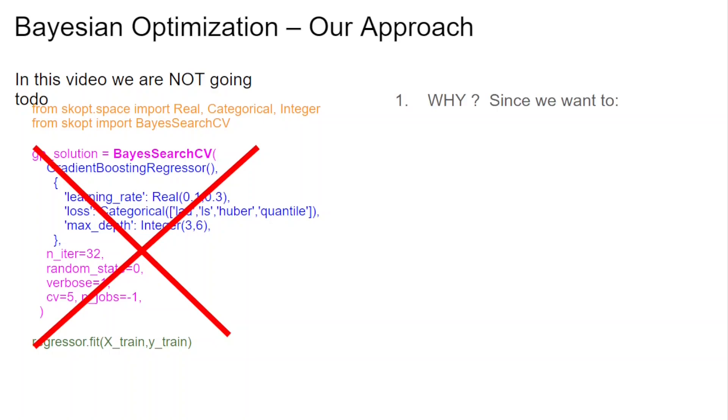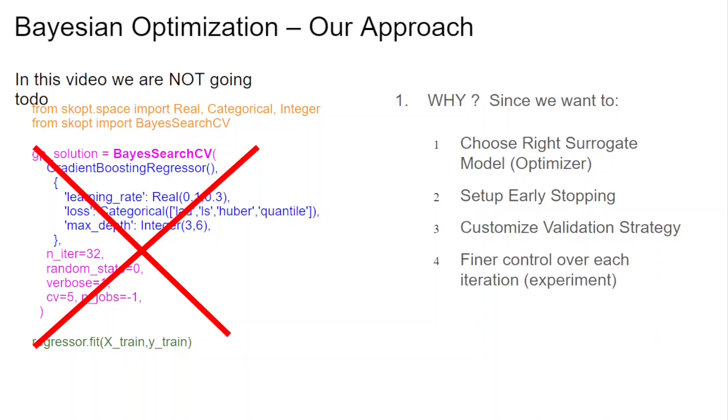But why do we want to take a little bit more elaborate route? It's because we want, number one, to choose the right surrogate model. We want to set up early stopping to bring more speed to the Bayesian search. And we want to customize the validation strategy for it to be more effective when it finds those minimum points. And obviously, we want to have finer control over each iteration.